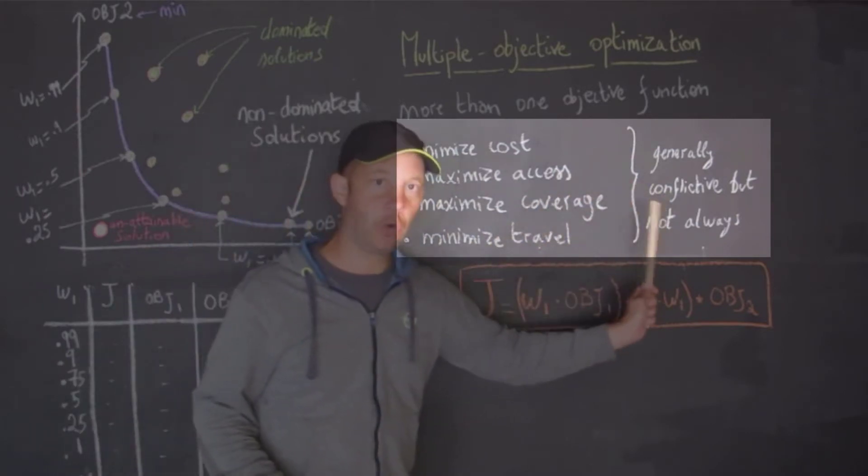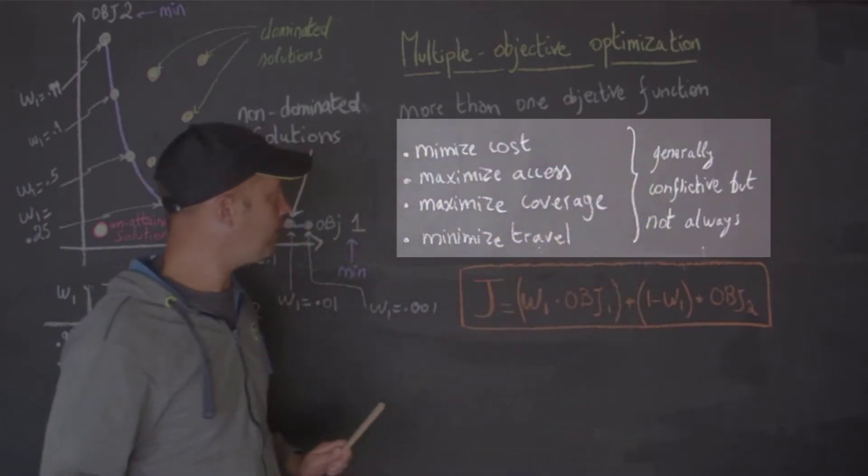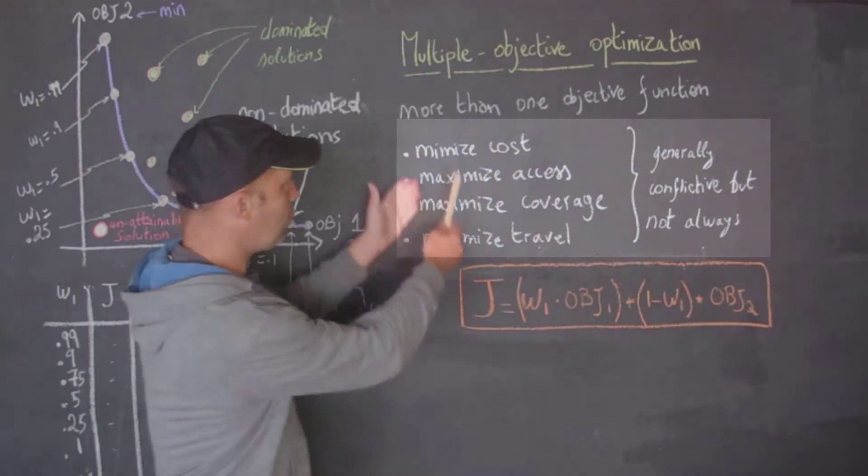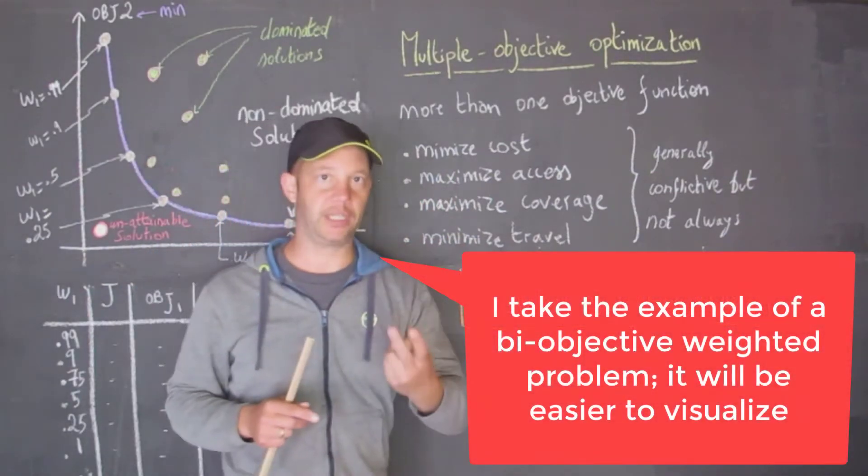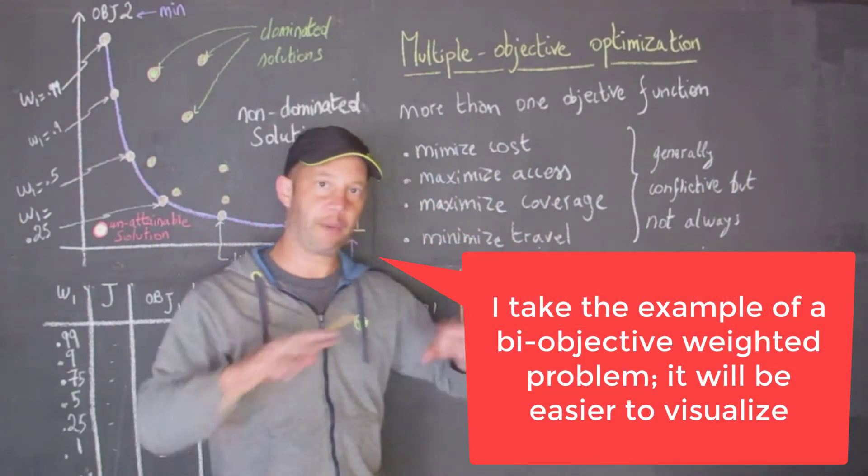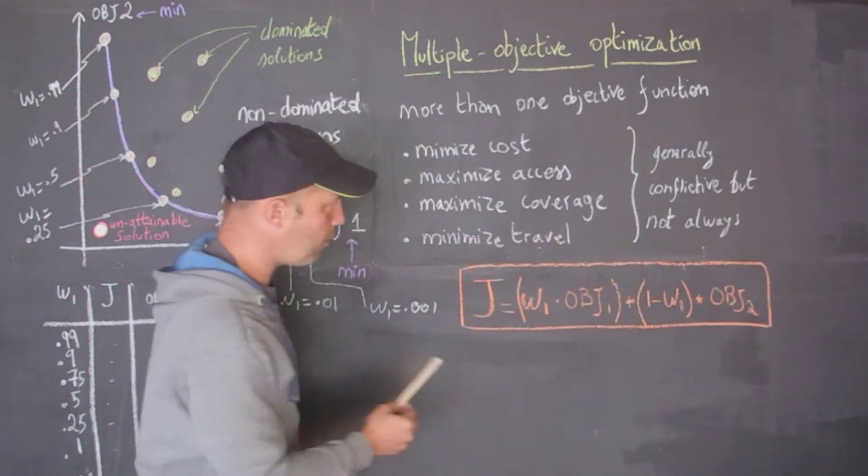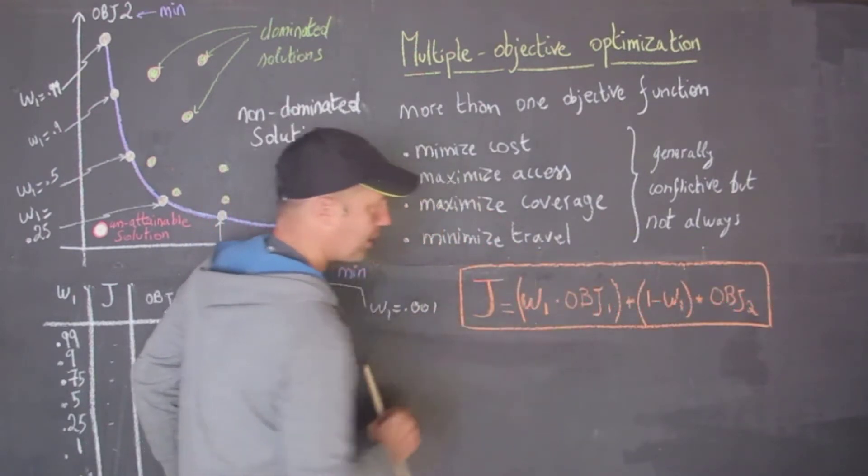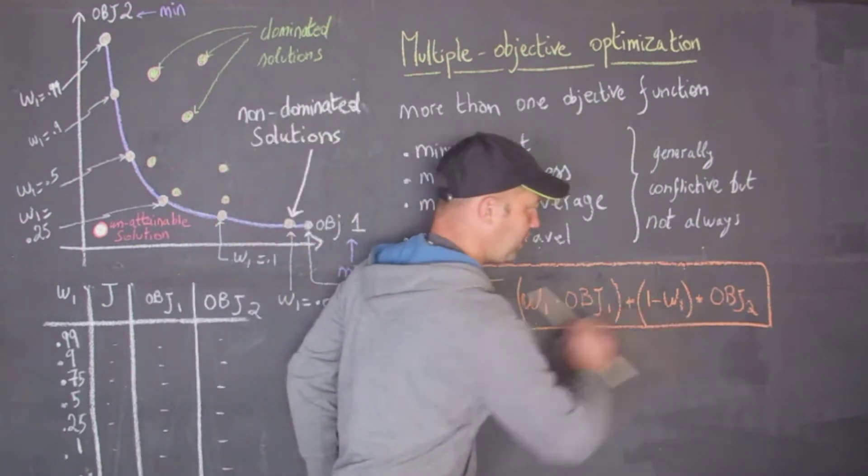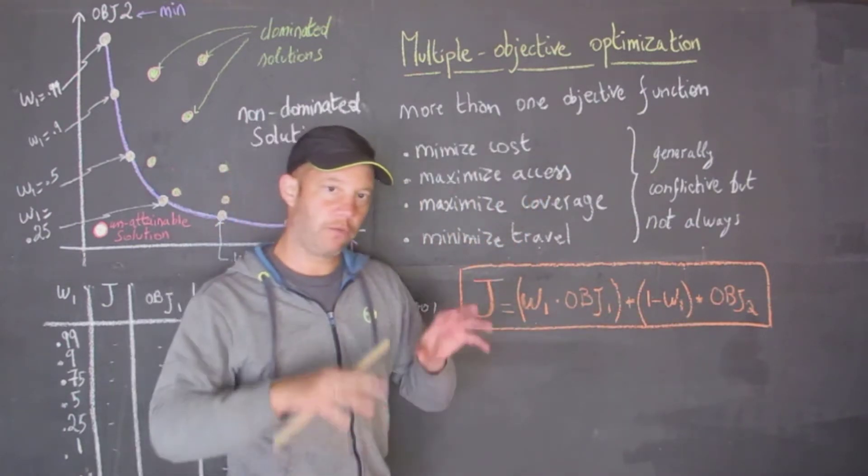Let's suppose that we are only interested in two objectives. We can go three, four, or five, but then it's harder and harder to visualize. So let's just take two: objective one and objective two. My idea is to try to find the optimal combination.